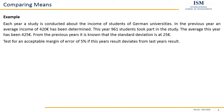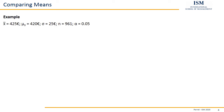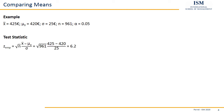We summarize all the information: arithmetic mean (this year's result) = 425 euros, testing value (last year's result) = 420 euros, standard deviation = 25 euros, number of observations = 961, and alpha = 5%. Plugging this into the formula for the test statistic, we get a test statistic of 6.2: (425 − 420) divided by 25, multiplied by the square root of 961.